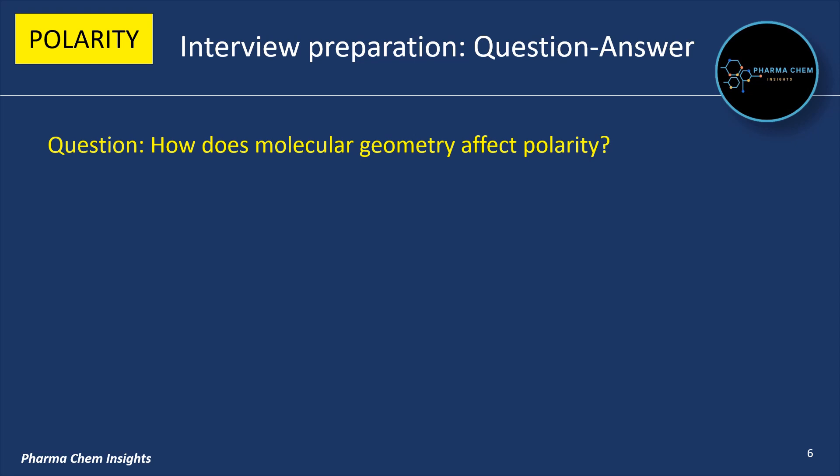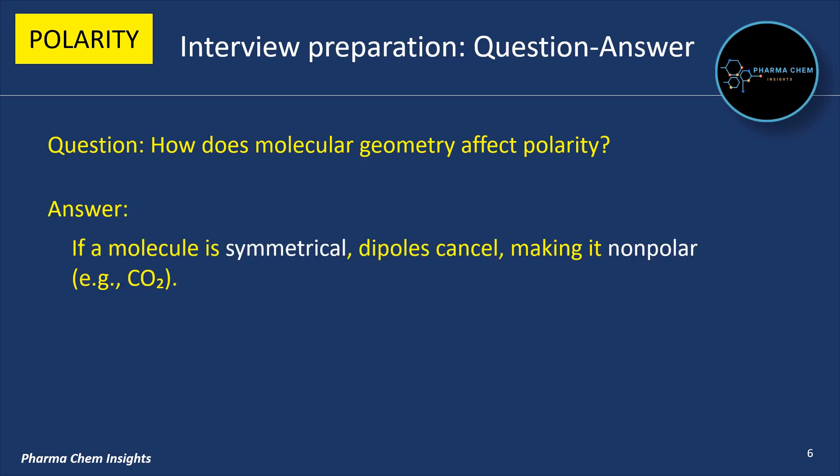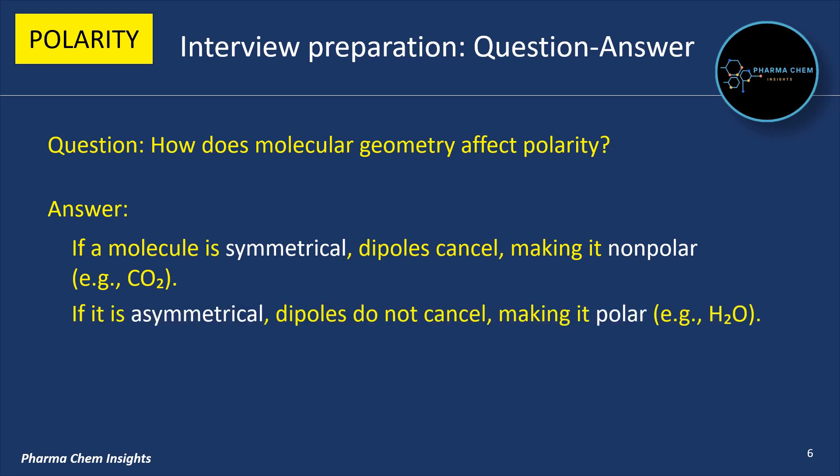Next question: how does molecular geometry affect polarity? Answer: if a molecule is symmetrical, its dipoles get cancelled, making it non-polar — example: carbon dioxide. And if it is asymmetrical, dipoles do not cancel each other, making it polar — example: water.